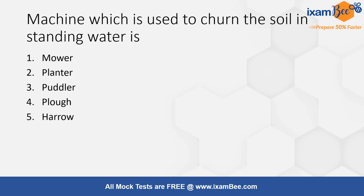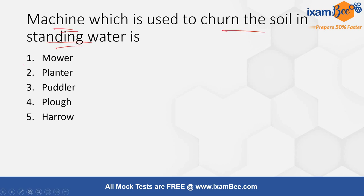The next question is: which machine is used to churn the soil in standing water — options are mower, planter, puddler, plow, or harrow? The machine used to churn the soil in standing water is known as a puddler. So the correct answer is option 3.